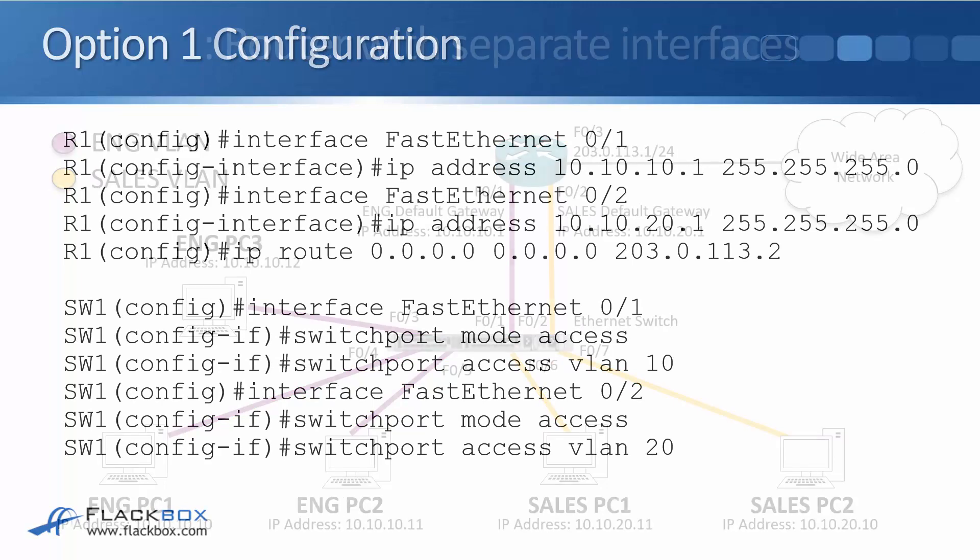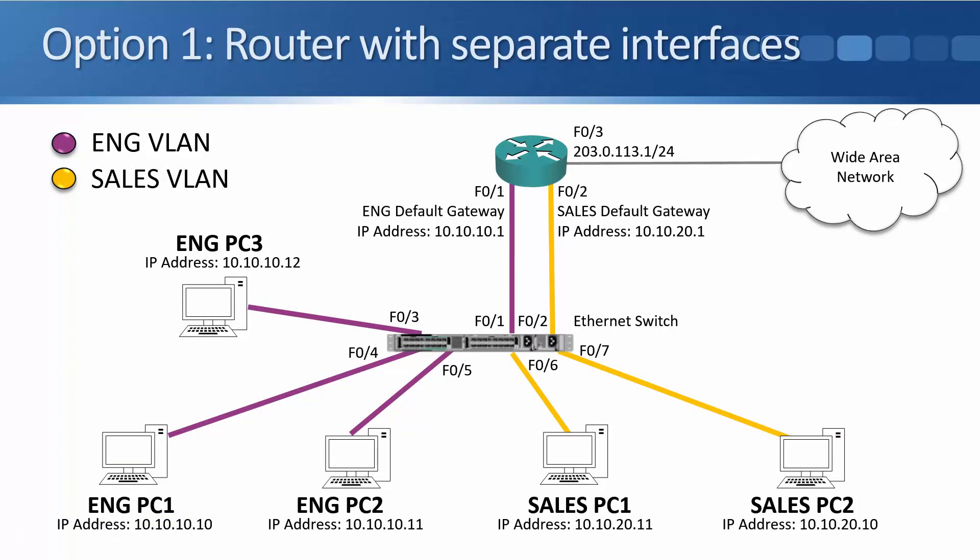The engineering VLAN is represented in purple and sales in yellow. On the switch, access ports are configured to put each host into the correct VLAN. The router's interface Fast Ethernet 0/1 is the default gateway for the engineering VLAN, assigned IP address 10.10.10.1. Engineering hosts are configured to use 10.10.10.1 as their default gateway.